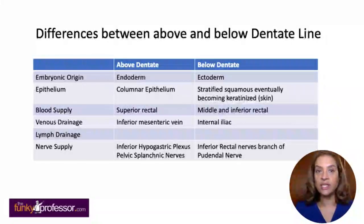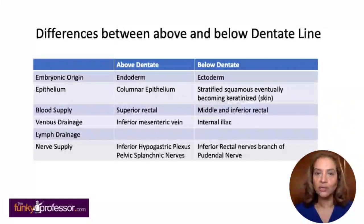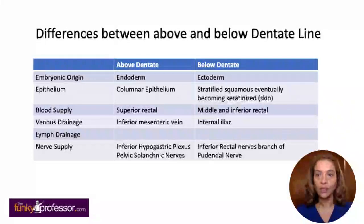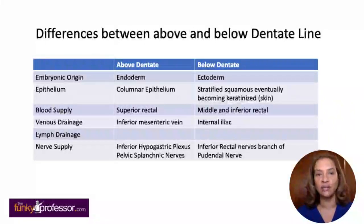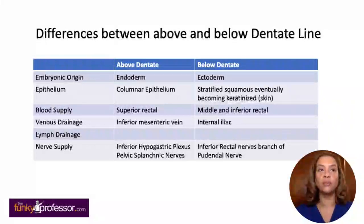The blood supply differs at the dentate line: above is the superior rectal artery (a branch of the inferior mesenteric artery), while below is the middle and inferior rectal arteries. Venous drainage also differs: above drains via the inferior mesenteric vein, and below to the internal iliac vein. The nerve supply is different too: above is the inferior hypogastric plexus and pelvic splanchnic nerves, whereas below is the inferior rectal nerves, a branch of the pudendal nerves.